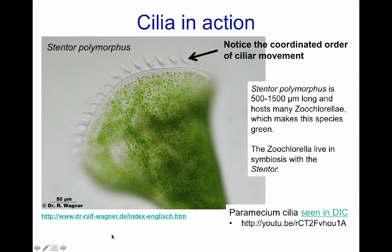Here we can look at a picture of Stentor. Stentor is a protozoan about 500 to 1500 micrometers — very large. It uses the cilia in this area to filter for food. Notice the coordinated order of movement: while some cilia undergo power strokes, others are recuperating during the recovery stroke.